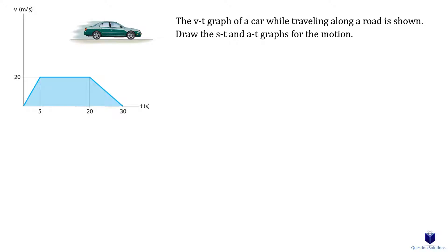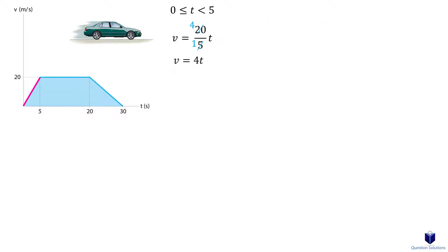Let's start by first writing the equations for each segment in the graph given to us. For the segment between 0 seconds and 5 seconds, our equation is v equals 4t.